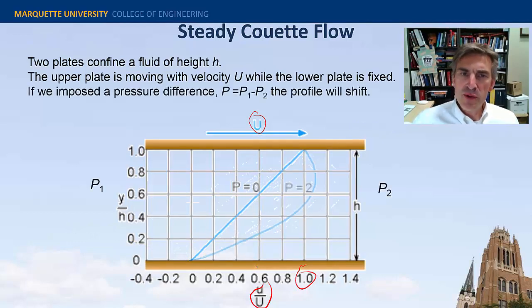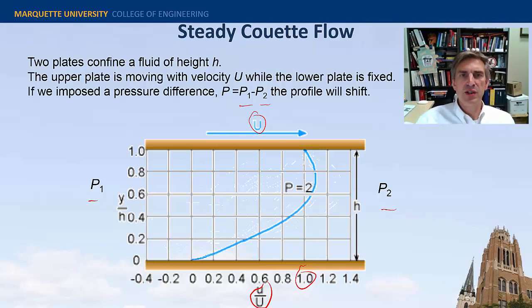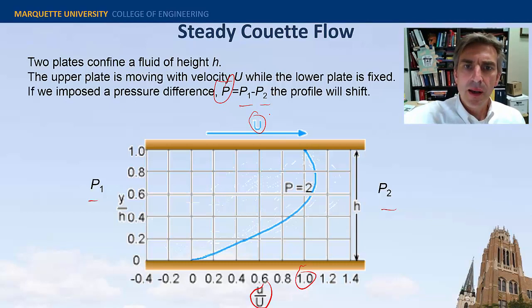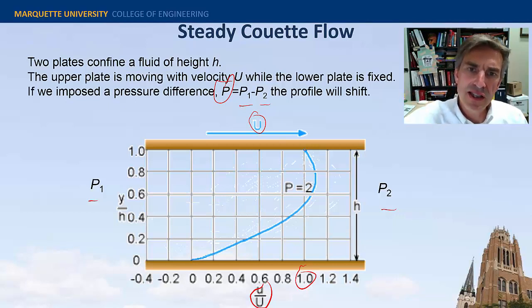Now if we impose a pressure gradient, so P1 minus P2 is no longer zero but some positive number, so P1 is larger than P2, the pressure is effectively helping to push the flow along. You can see that it extends larger than the ratio of one. That's due to the fact that the pressure is helping to push the fluid down this channel.